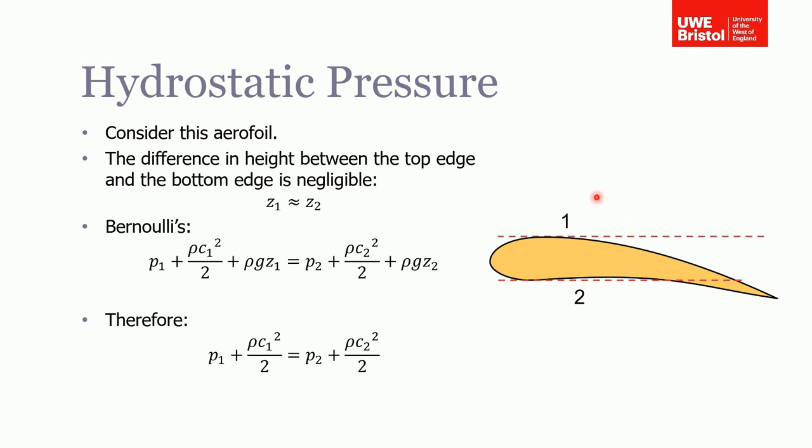For this aircraft flying through the air, Bernoulli's static pressure term plus dynamic pressure term plus hydrostatic pressure term equals a constant. That would be true everywhere, but for this example we're going to consider between 1 and 2—the pressure on the top edge of the aerofoil and one point on the bottom edge.